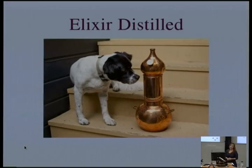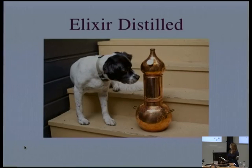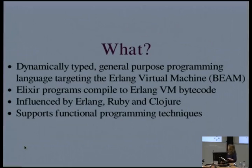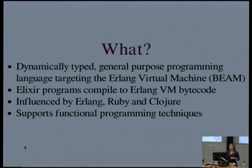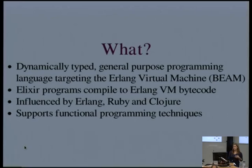To start off, I'm going to give a bit of an overview of the language itself. And as a former journalist, I'm going to do that with the good old five W's and the H. So firstly, what is Elixir? Elixir is a general-purpose, dynamically-typed language that targets the battle-tested Erlang virtual machine, also known as Beam. Elixir programs compile down to Erlang bytecode, so there's no performance hit from calling Erlang from Elixir or vice versa.